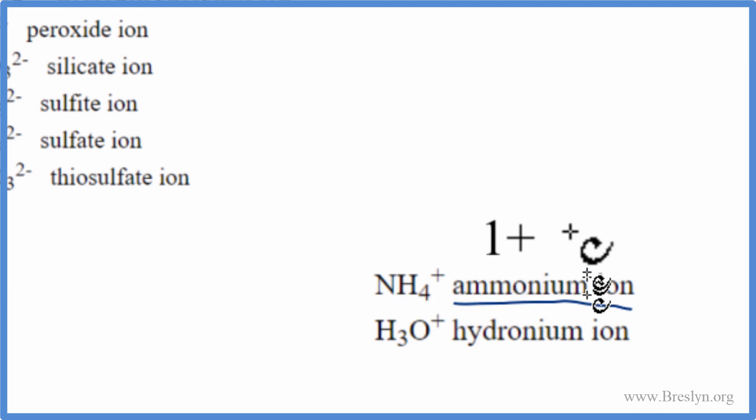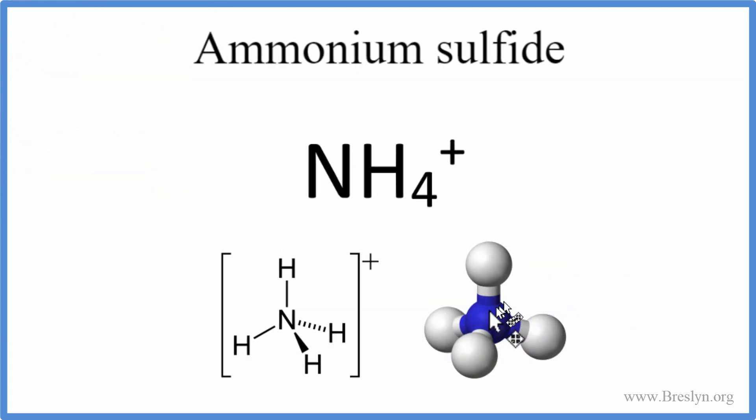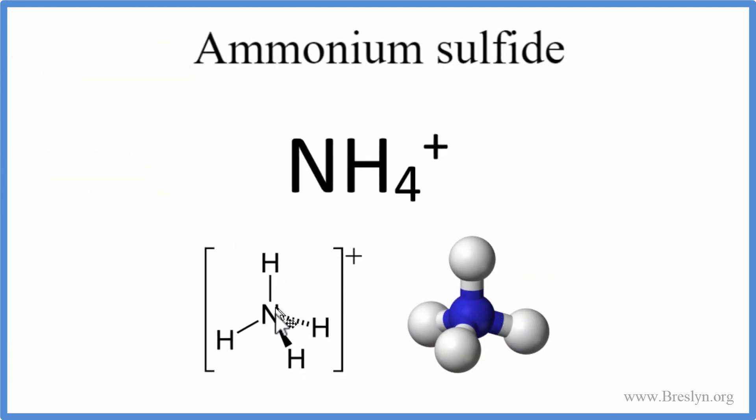NH4 plus. It's one of the few positive polyatomic ions. So the ammonium ion, NH4 plus. Good one to memorize. So here's our ammonium ion, and it's a nitrogen with four hydrogens bonded to it, and then it has that overall positive charge. So let's write NH4 plus below the ammonium.